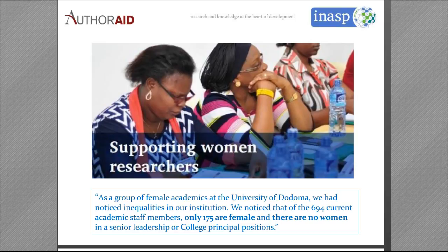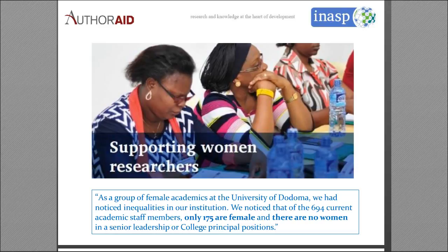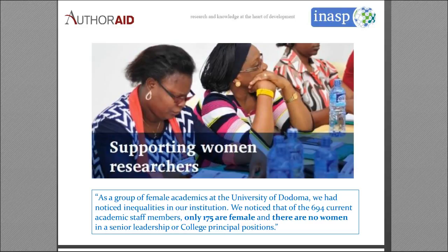One of our more recent focuses is supporting women researchers. This was prompted by working with the University of Dodoma in Tanzania. They initially wanted to run research writing workshops, but as they started they realized gender inequalities were slowing their progress. In 2015, of 694 academic staff members, only 175 were female, and there were no women in senior leadership or college principal positions — at a university with about 20,000 students and seven colleges.